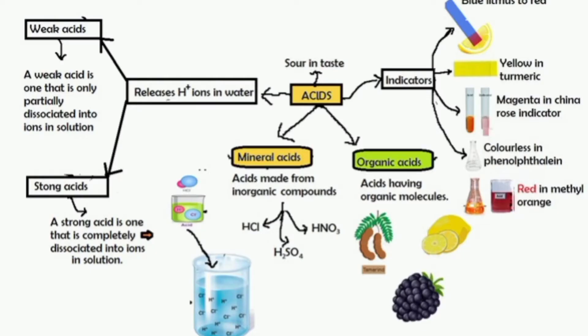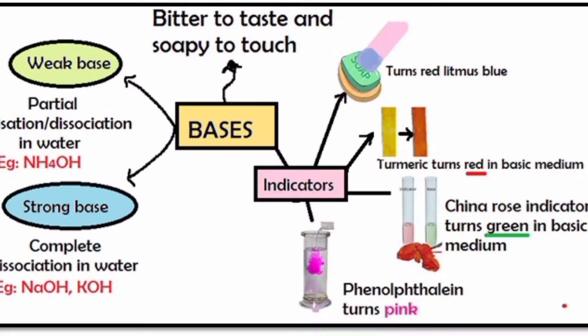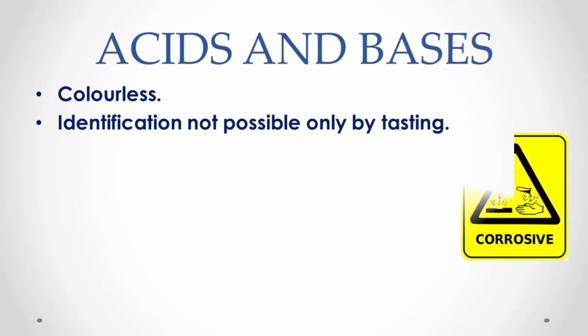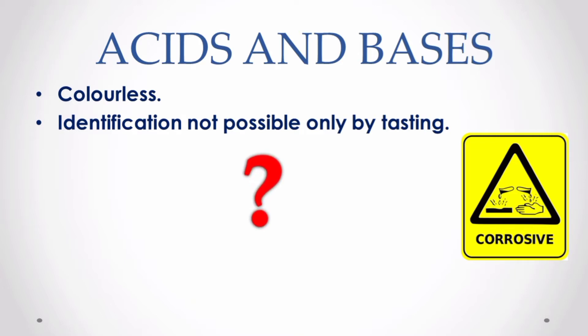In the previous video we had seen that acids are substances that release hydrogen ions in water and bases are substances that release hydroxide ions in water. Organic acids can be identified by their taste, but mineral acids which are usually colorless in nature cannot be identified by just looking at them. Also tasting them can be dangerous because concentrated acids or bases are corrosive in nature.